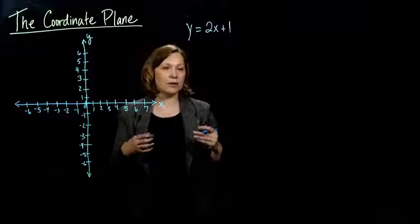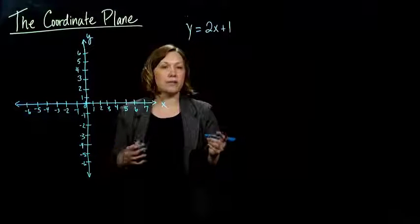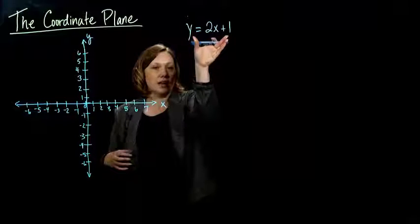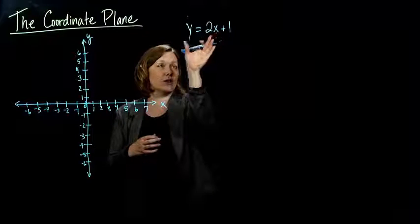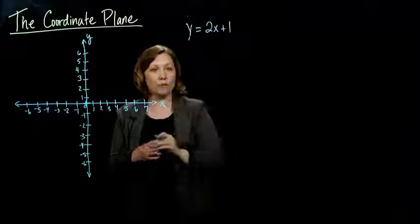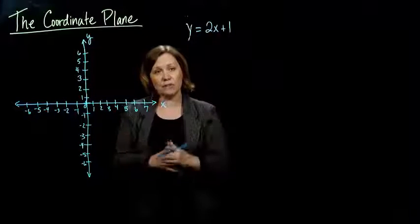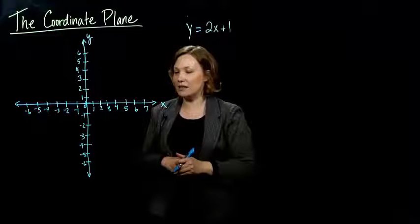And so we have some numbers that go together for some reason. Either we put them together, they go together because if we plug an ordered pair into here, or two numbers into here, a number for x and a number for y, and then make that a true statement.